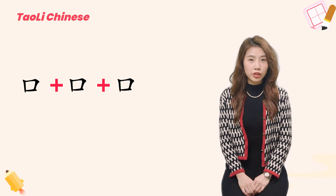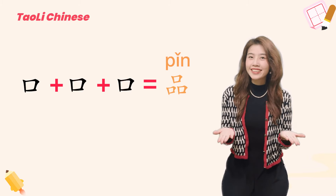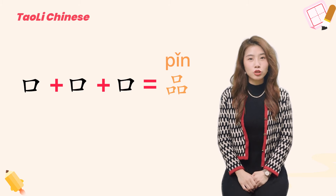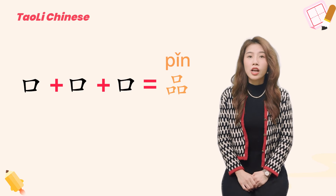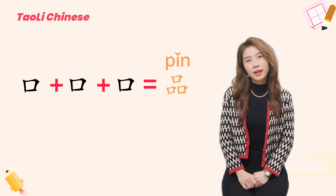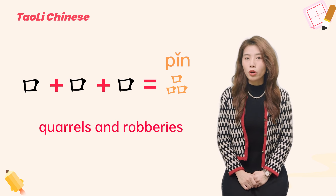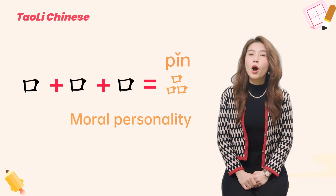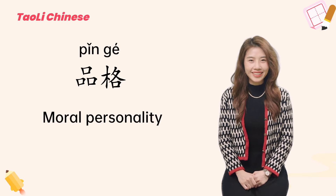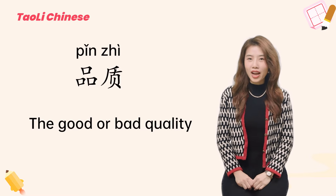Same rules — what would the character be if there were three of them together? The answer is 品. At this point, let's go back to the original meaning of 口. Three means a lot of people here. In ancient times, people were social animals and lived in the same area. But once there were more people, there were more quarrels and robberies. So 品 means moral personality. For example, 品格 means moral personality. Besides that, 品 can also indicate quality — for example, 品质 means the good or bad quality of an item.